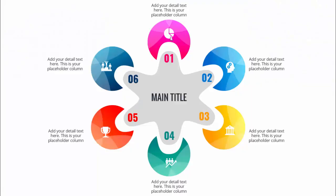In today's tutorial, I am going to show you how to make a star shape six-options infographic slide in PowerPoint. As you can see, I have created a star shape here with gray color and added six oval shapes for each option with a different unique color using gradient fill. I have added an icon for each option and you can add your own detailed text.